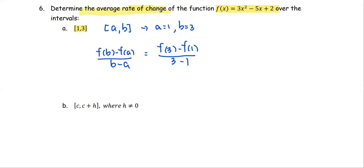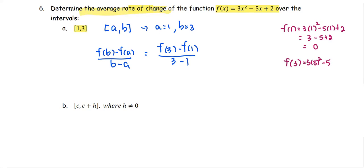On a side note, we're going to compute the function value at each x value. f(1) = 3 times 1 squared minus 5 times 1 plus 2, or 3 minus 5 plus 2, which equals 0. And f(3) = 3 times 3 squared minus 5 times 3 plus 2. That gives 3 times 9 which is 27, minus 15, plus 2, which turns out to be 14.